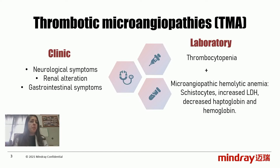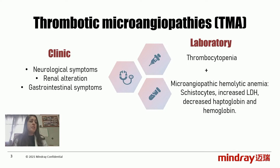Nausea, vomiting, abdominal pain, and gastroenteritis are usually observed. Regarding the laboratory, these patients have thrombocytopenia defined by platelet count less than 150,000 or a decrease of 25% compared to baseline. This thrombocytopenia occurs in conjunction with microangiopathic hemolytic anemia characterized by schistocytes greater than 1% in the peripheral blood smear, increased LDH, and decreased haptoglobin and hemoglobin.